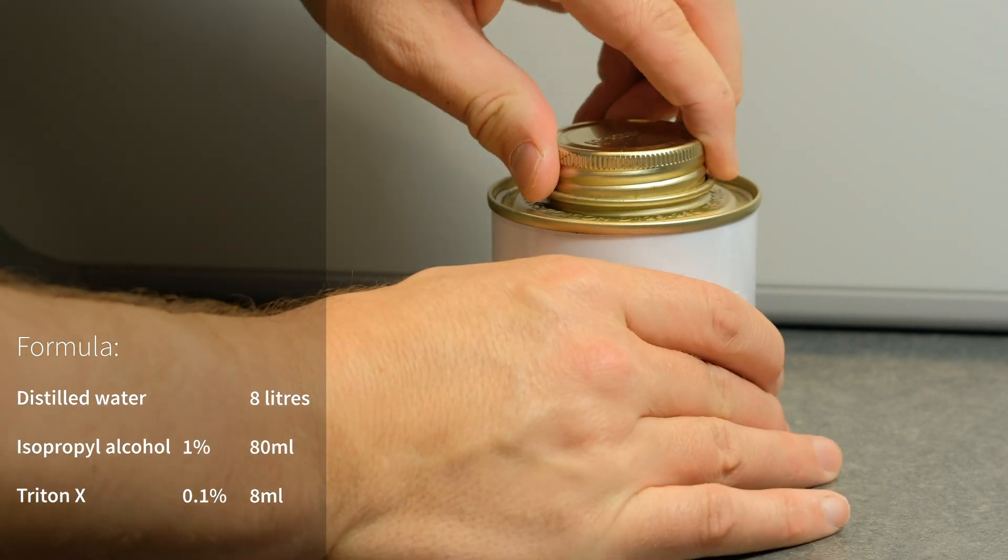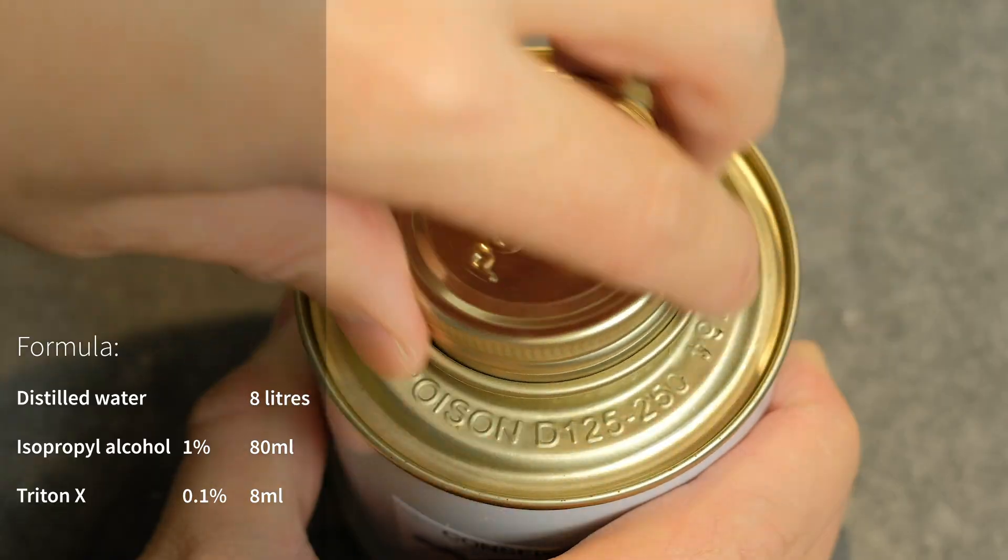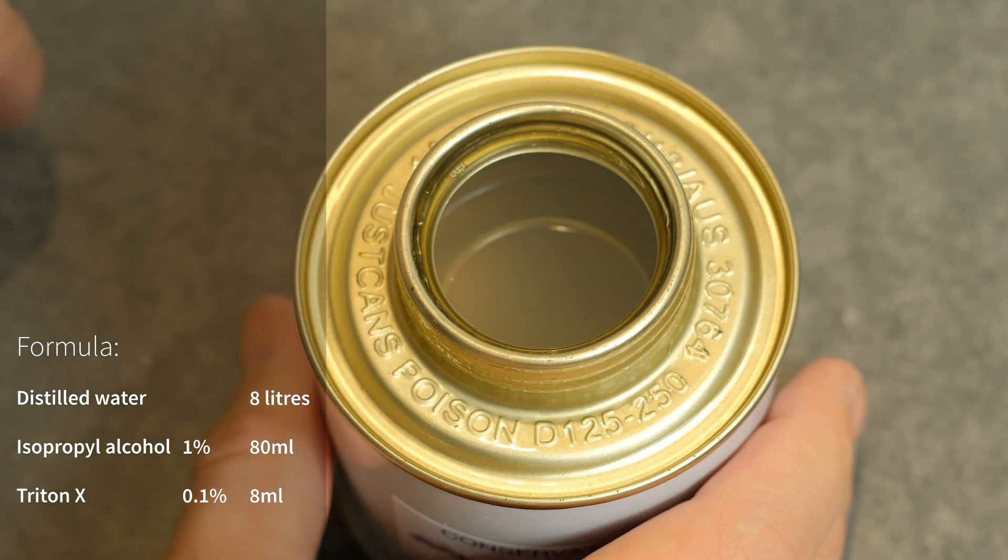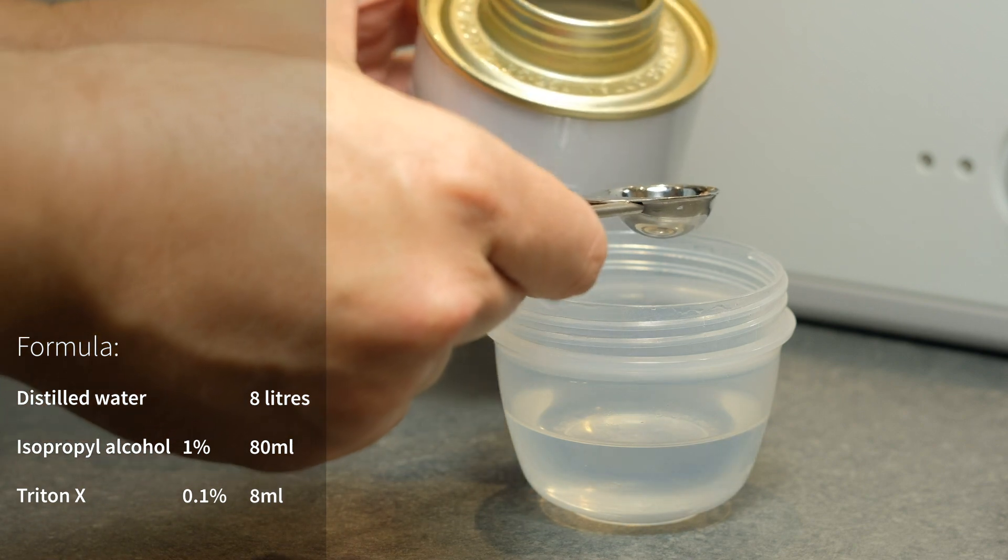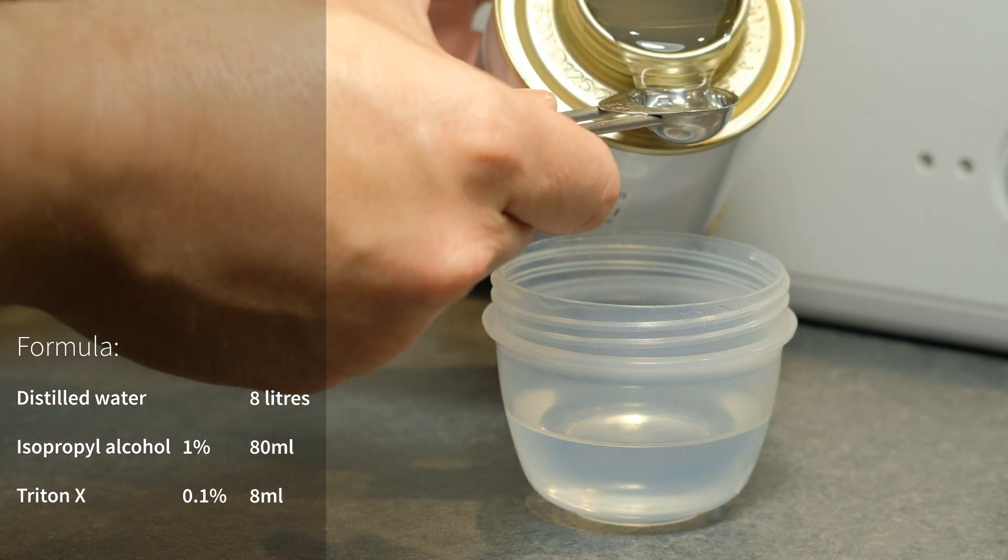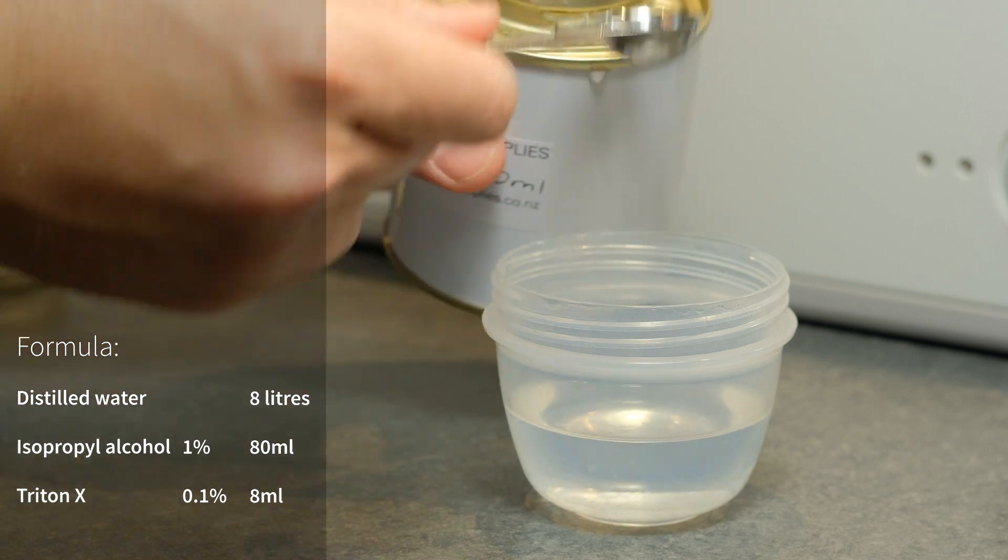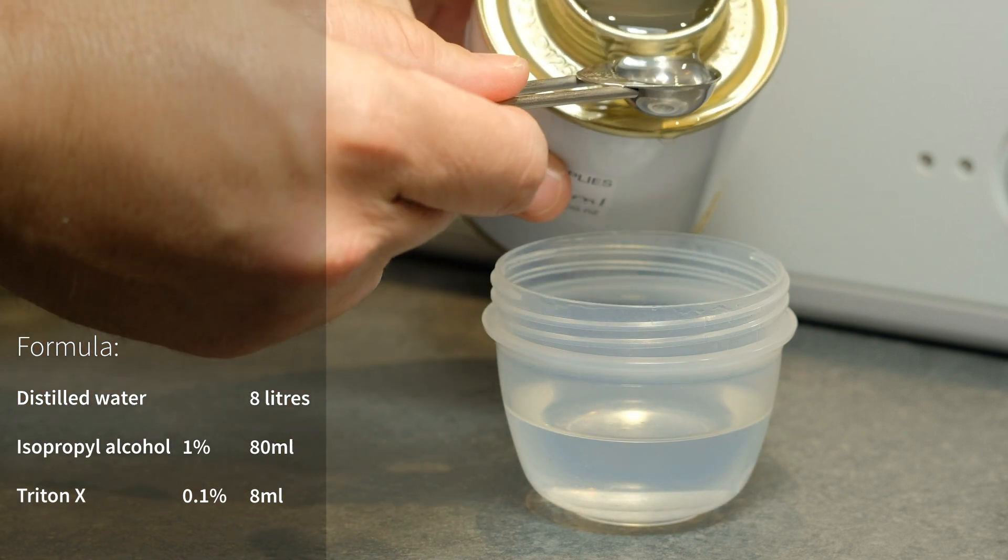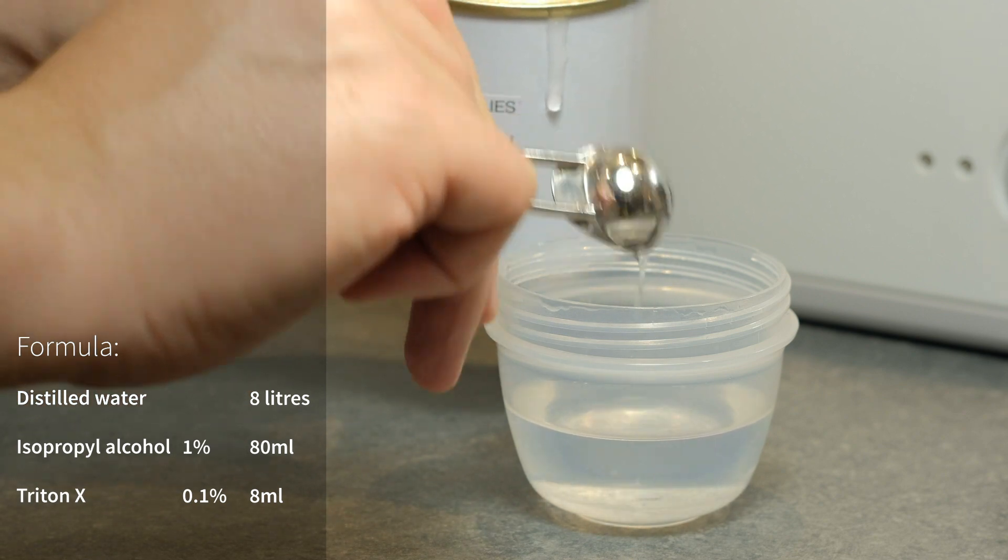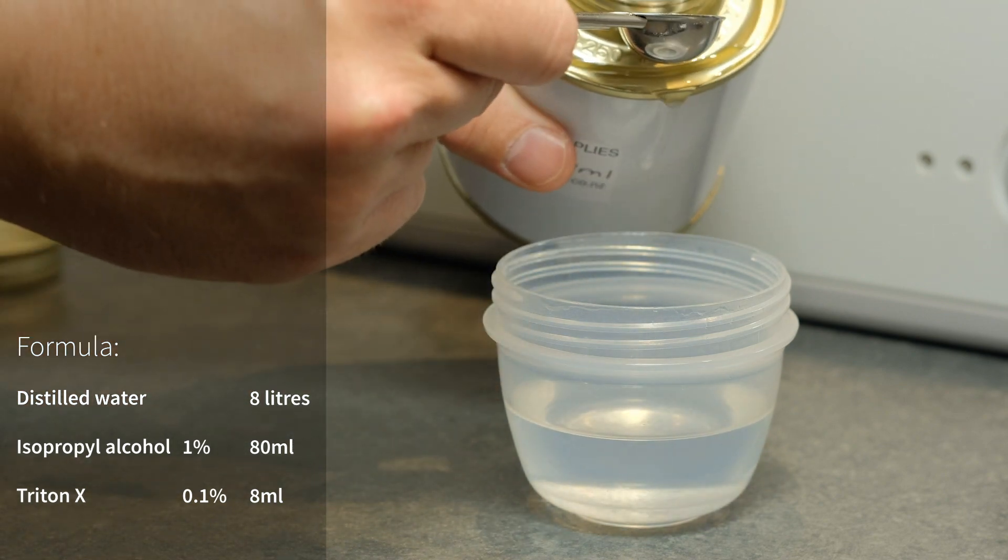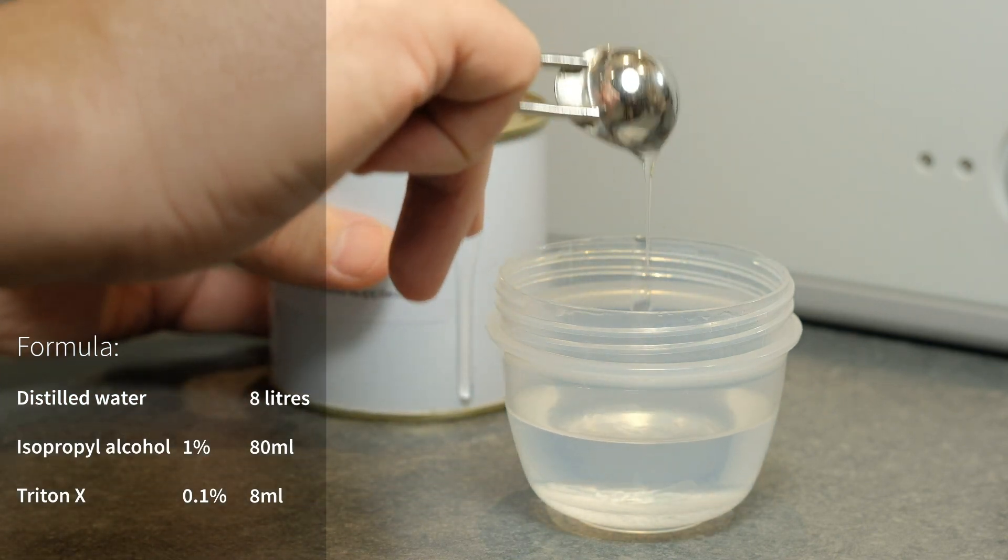So I pour that in and this here is Triton X which is a really mild detergent. I got it from conservationsupplies.co.nz but if you're in another country you would have lots of places to find it from I'm sure. So I pour the Triton X in straight into the alcohol. If I have eight liters of distilled water I'll use 0.1% of Triton X. So that's about eight milliliters of Triton X.